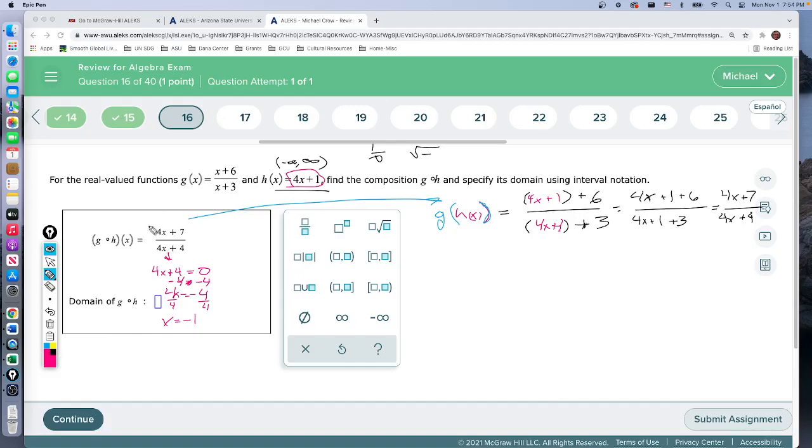So our domain is going to be, let's go ahead and clear this stuff out, so it's going to be everything except negative 1, and the way we write that we go from negative infinity to negative 1, but we don't include the negative 1, and then we union that with negative 1 on the right side of negative 1. This is the left side, negative 1 is right here in the middle, it's left out, and then we go all the way to positive infinity. So that's going to be our domain there.